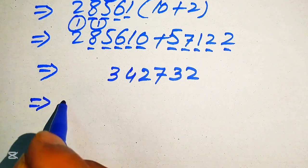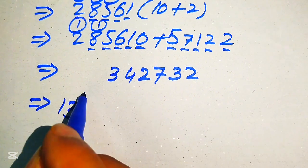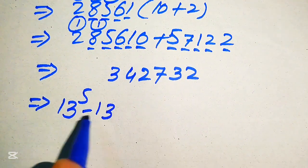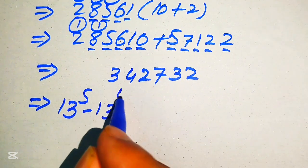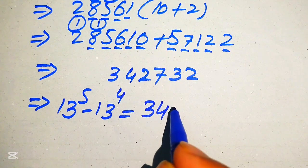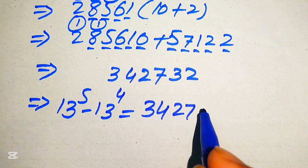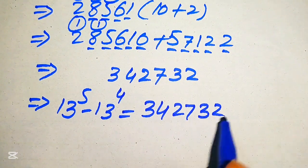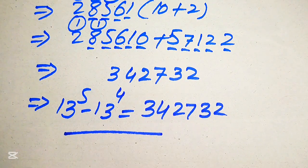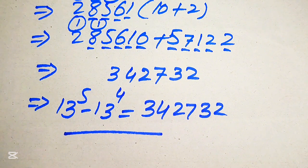Finally, the simplified form of the given expression 13 to the power of 5 minus 13 to the power of 4 equals 342732. This is our final answer. Thank you so much for watching this video — please subscribe to my channel for more exciting videos.